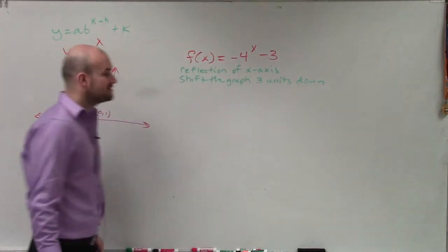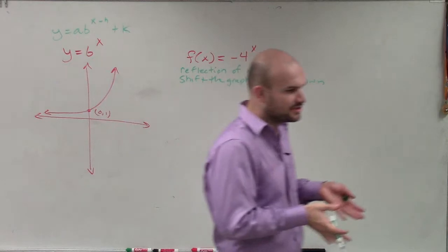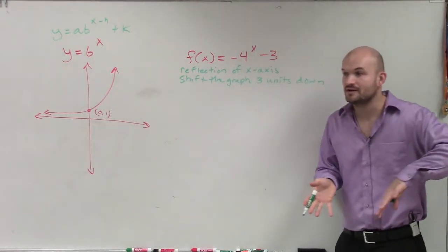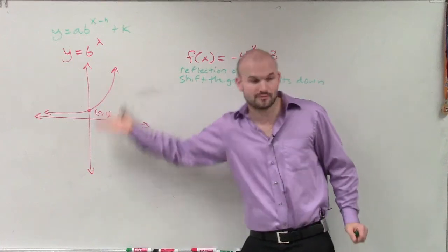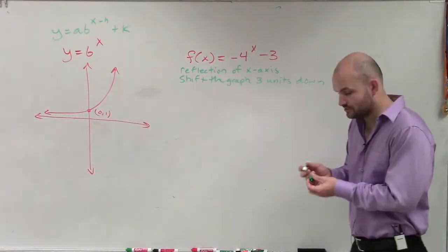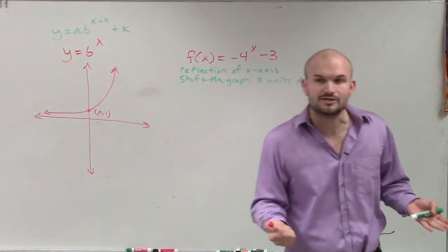So there's a couple ways you guys could do this. One way is you guys could simply just look into reflecting this graph, and then reflecting this parent graph, and then shifting it three units down. The other way that I told you guys to look at this is to just create a table of values. And you don't have to get crazy on your table of values.